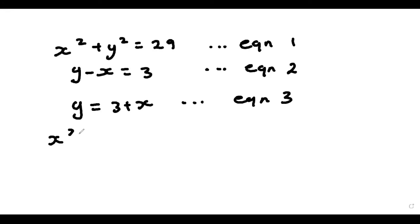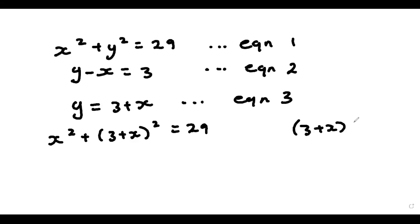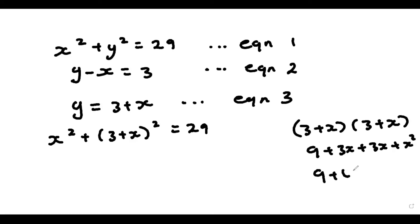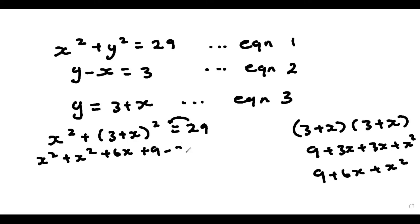So I have x squared plus (3 plus x) all squared is equal to 29. What is (3 plus x) all squared? That's (3 plus x) times (3 plus x), so that's 9 plus 3x plus 3x plus x squared, which gives us 9 plus 6x plus x squared. So now I have x squared plus x squared plus 6x plus 9, and carrying over the 29 it becomes minus 29, equal to 0. So now I have 2x squared plus 6x minus 20 is equal to 0.